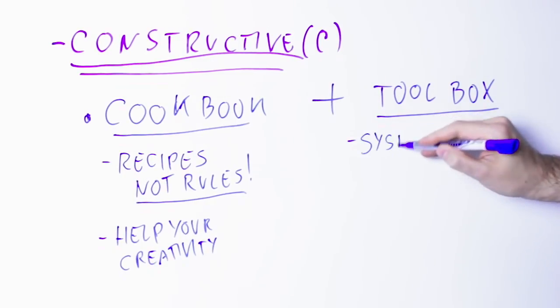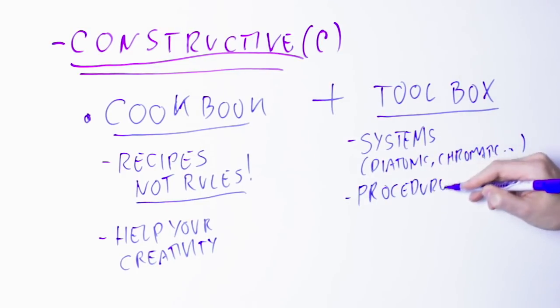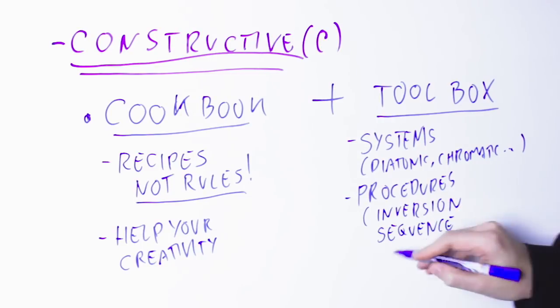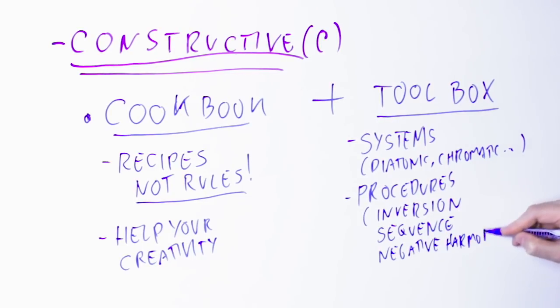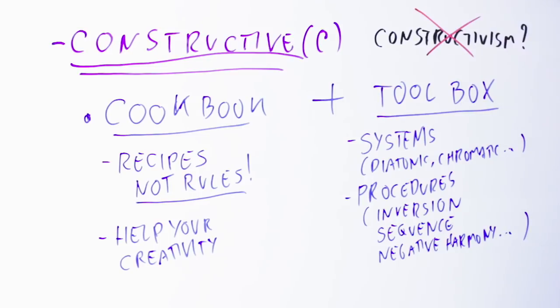The toolbox instead provides systems and procedures and ideas that produce results, and you decide if a specific tool is appropriate to what you want to do in that moment. Now before I go ahead, let me specify that even if I call this approach the constructive approach to music theory, this has nothing to do with the philosophy of constructivism. So how does this change the way you understand and use music theory?